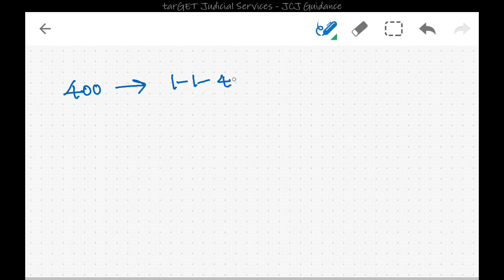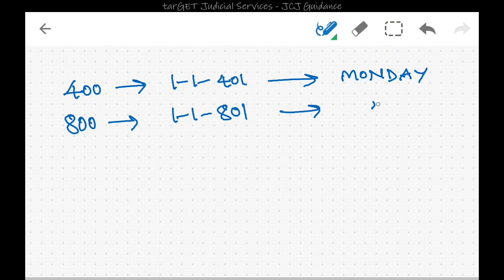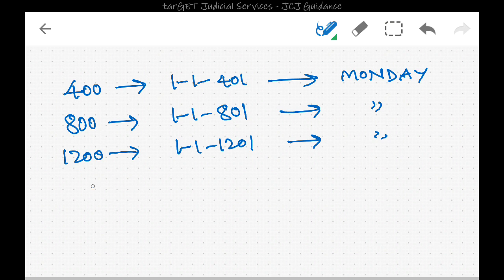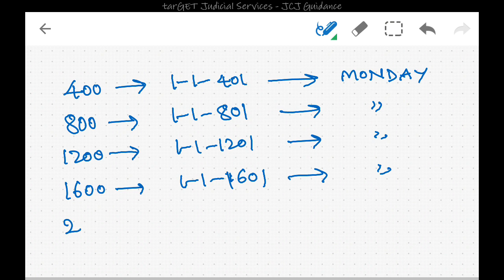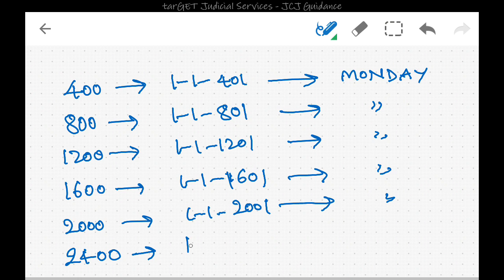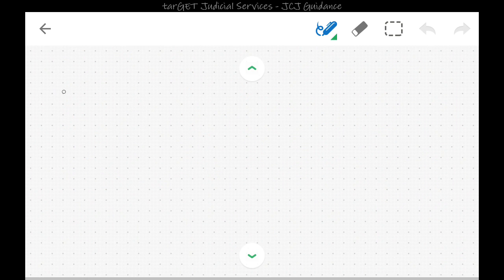For example, 400 is a leap century so 1st January 401 was a Monday. Same for 800 — 1st January 801 was a Monday. 1200 — 1st January 1201 was Monday. 1600 — 1st January 1601 was Monday. 2000 — 1st January 2001 was a Monday. The next leap century will be 2400, and 1st January 2401 will also be a Monday. This is Concept 1.